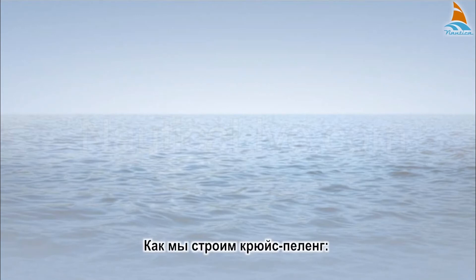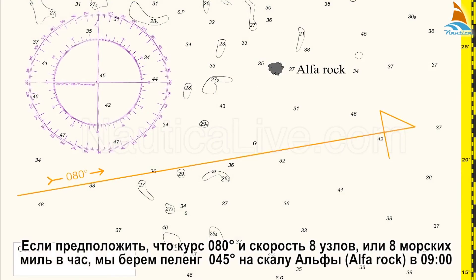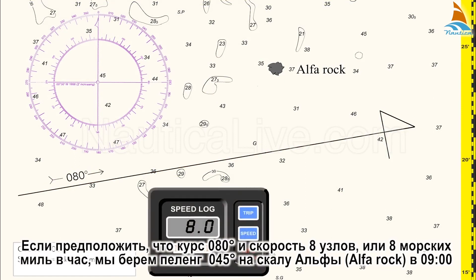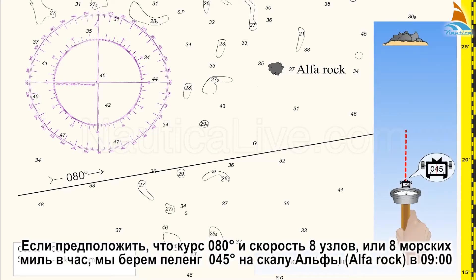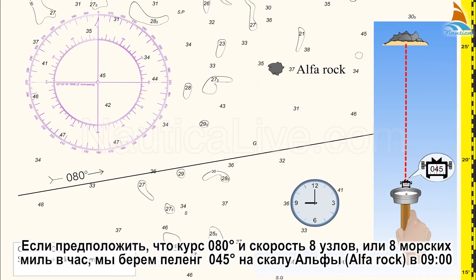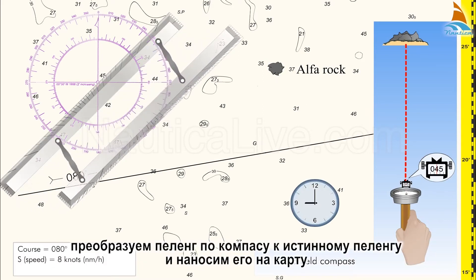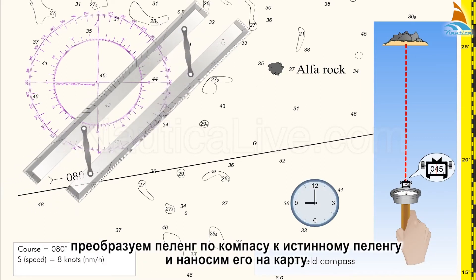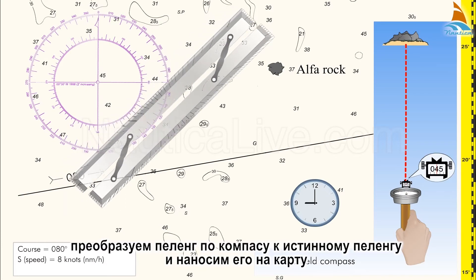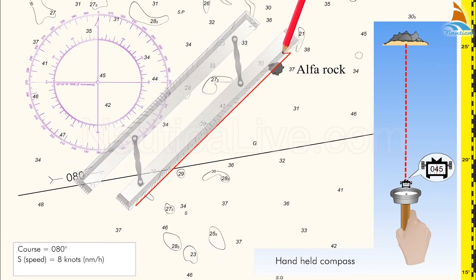This is how we plot a running fixed position. Assuming the course is 080 degrees and the speed is 8 knots or 8 nautical miles per hour, we take a bearing of 045 degrees on Alpha Rock at 0900. Now convert the compass bearings to true bearings and we plot it on the chart.